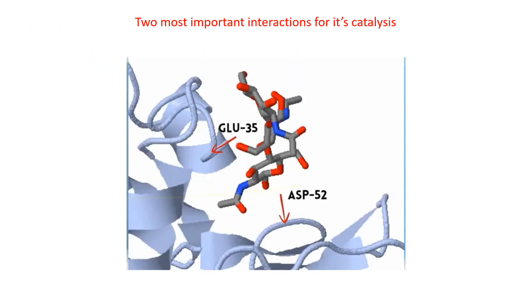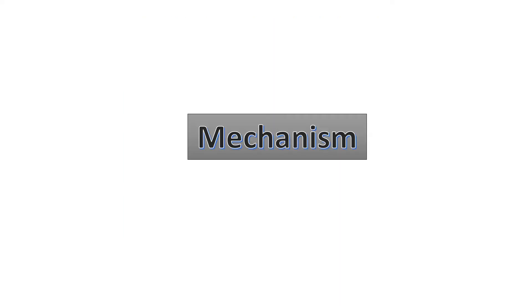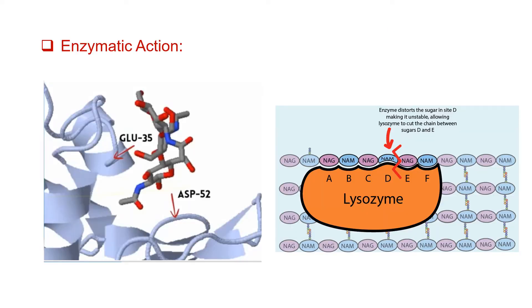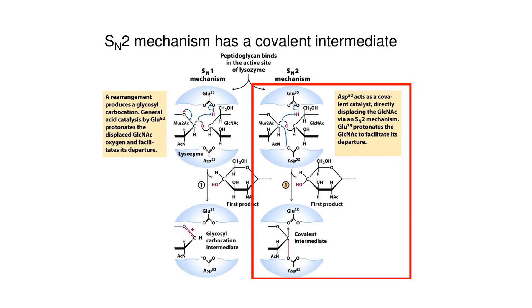Here we can see two most important interactions for its catalysis. Now look at the mechanism of how these two amino acids show their activity in the enzyme pocket. There are two proposed mechanisms: first, the SN1 pathway which is Philips mechanism, and the other is SN2 mechanism with a covalent intermediate consistent with current data.